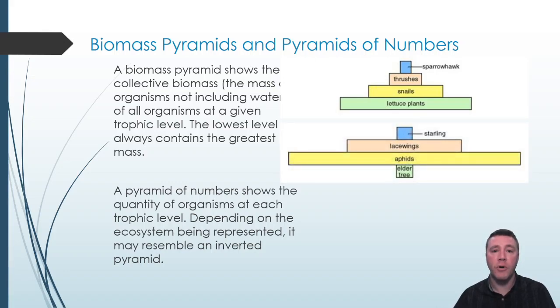On the other hand, some pyramids of numbers are inverted, like this one. This pyramid of numbers is considering a single tree and all of the organisms that live in or on it as its own ecosystem. Although there is only one producer supporting large quantities of aphids, lacewings, and starling birds, that single elder tree has far more biomass than all of the aphids, lacewings, and starlings combined.